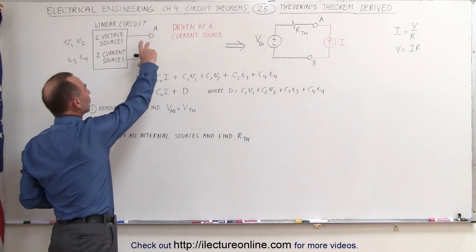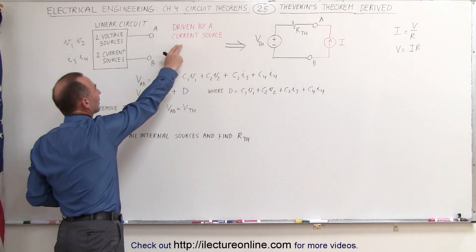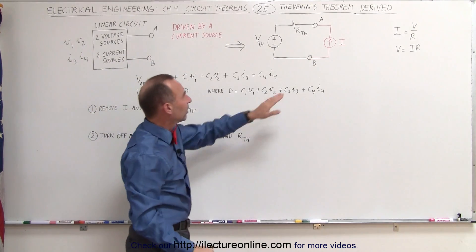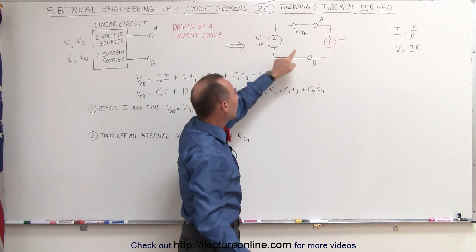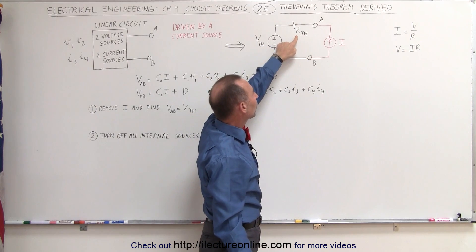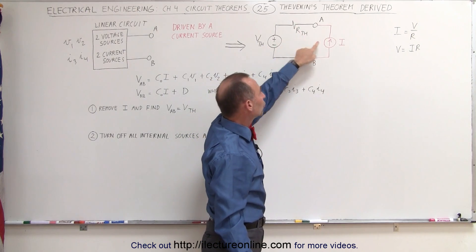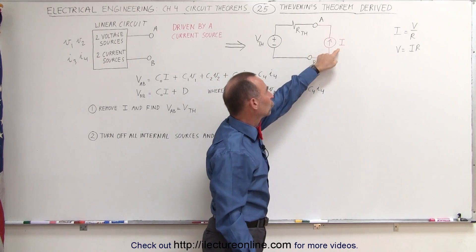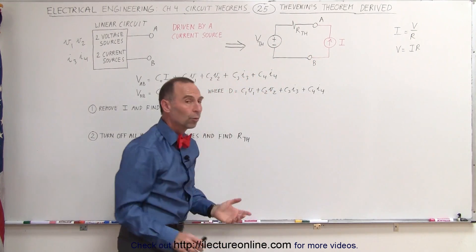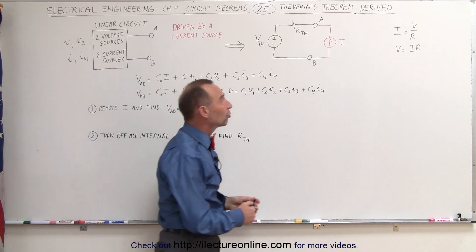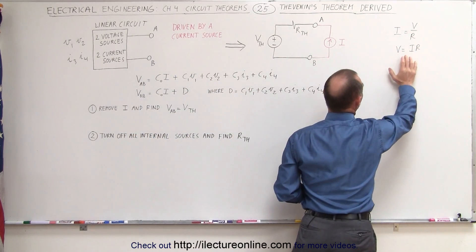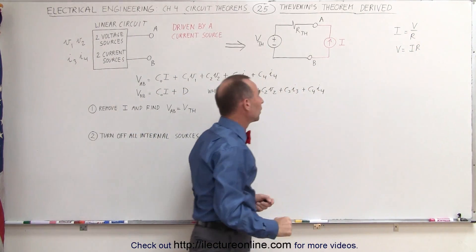We're going to drive that circuit with a current source, so that it looks like this — the Thevenin equivalent voltage and Thevenin equivalent resistance driving it with a current source called I. Also remember Ohm's law: I equals V over R, and V equals I times R.